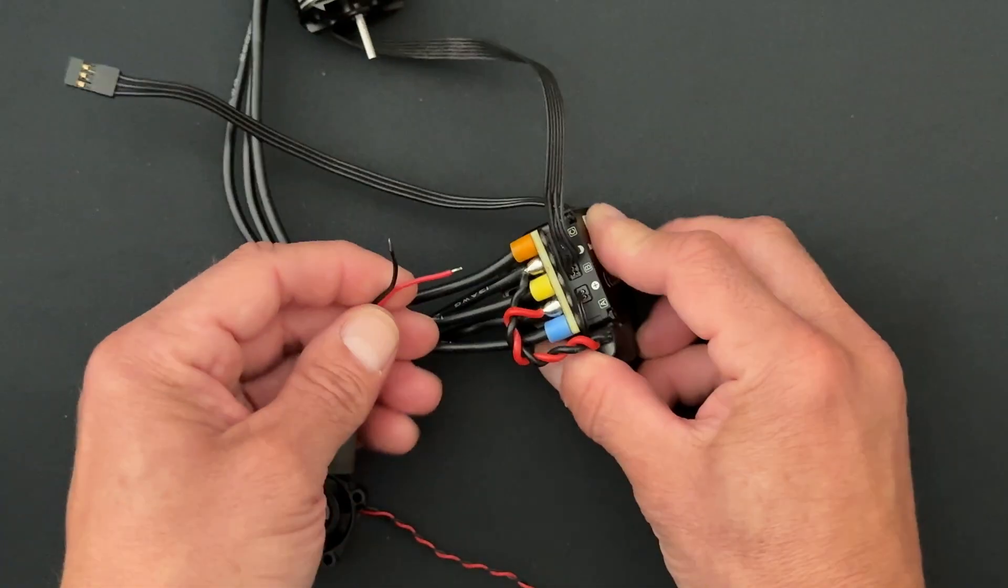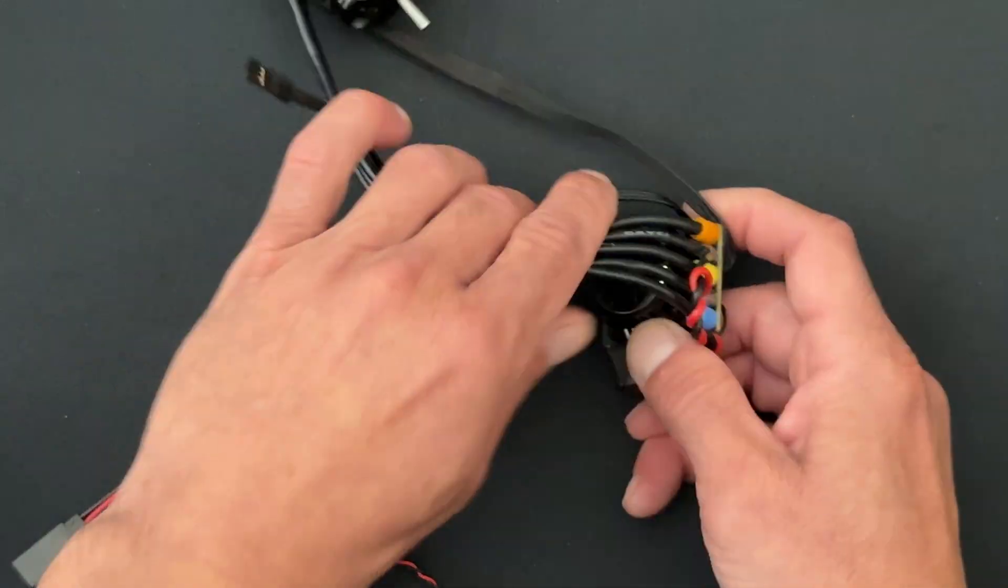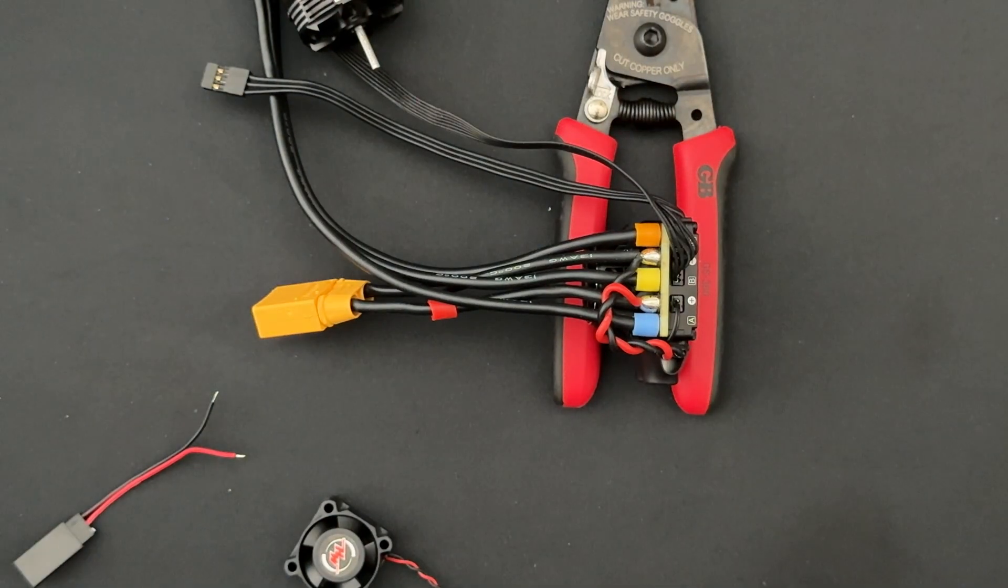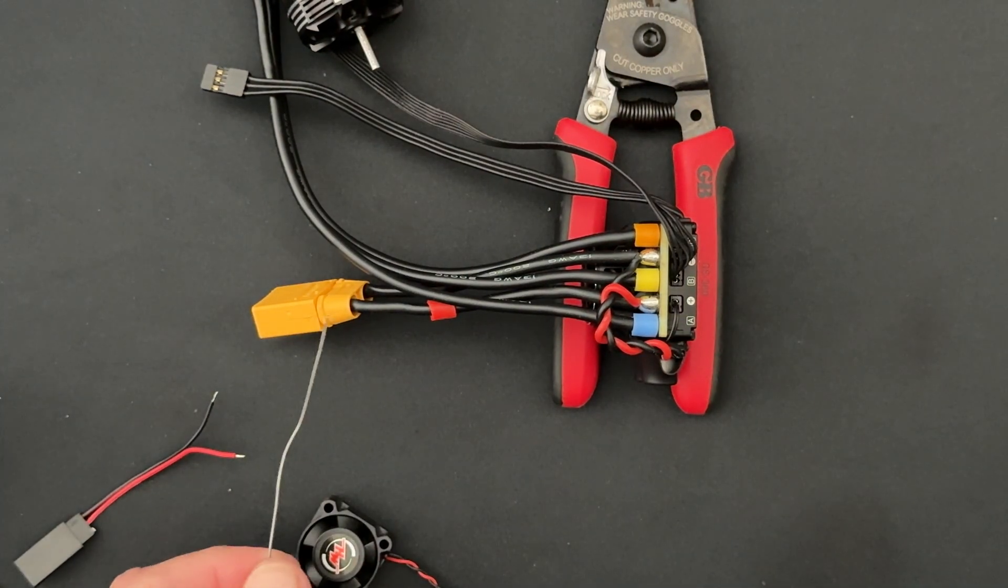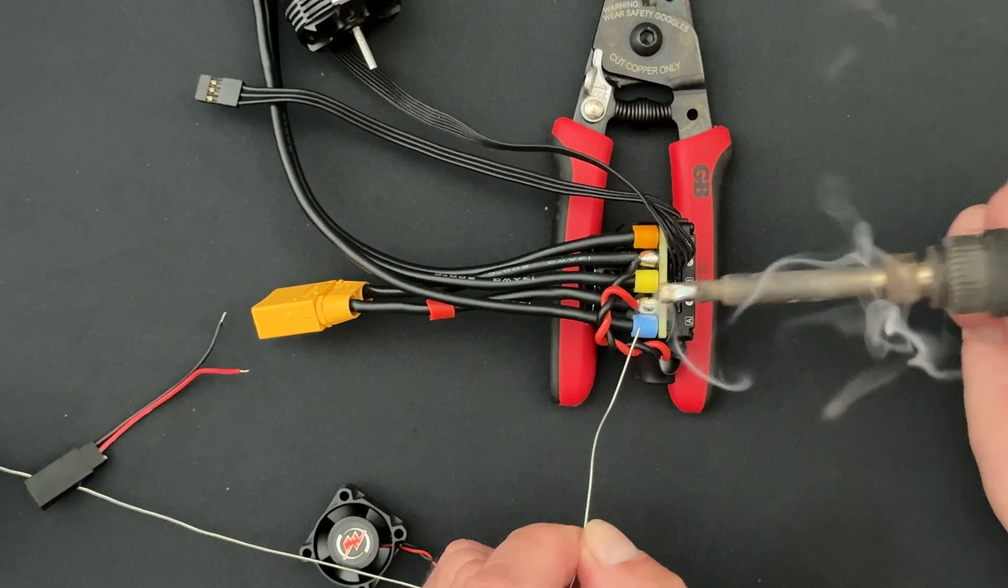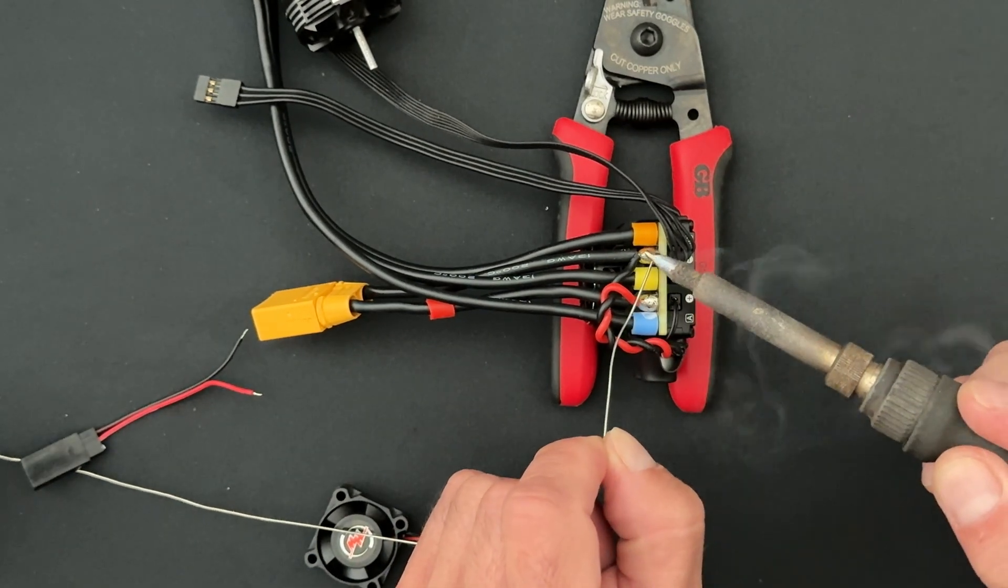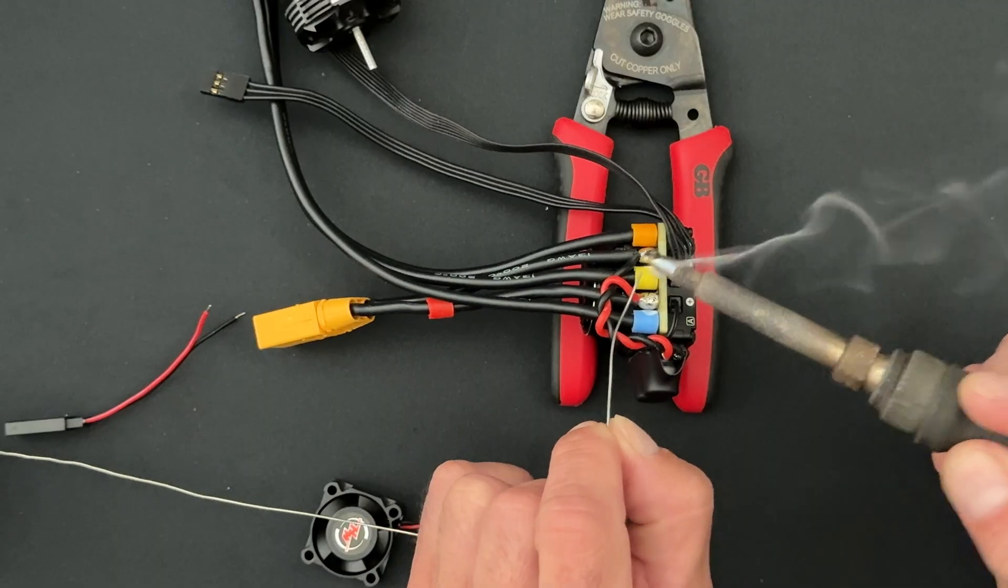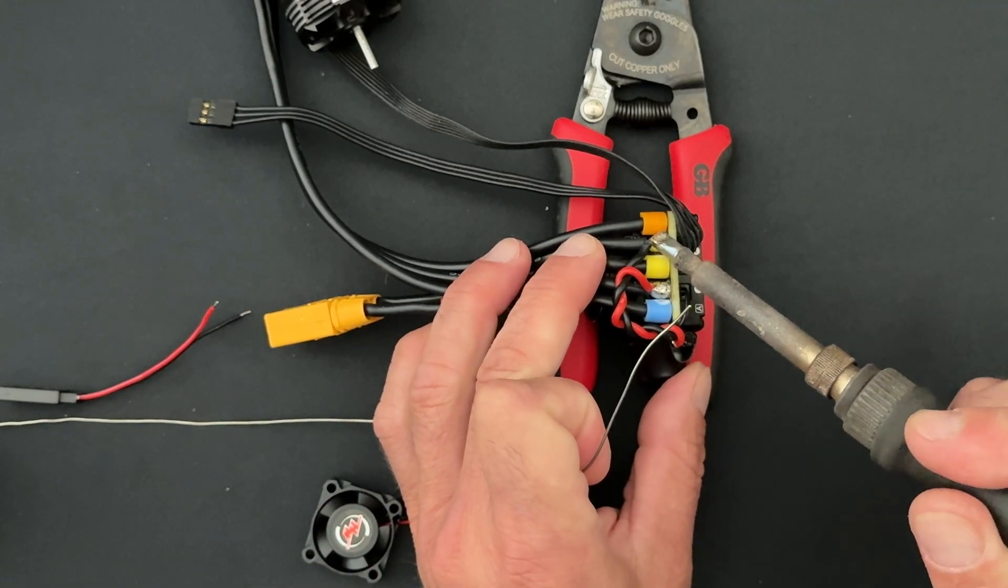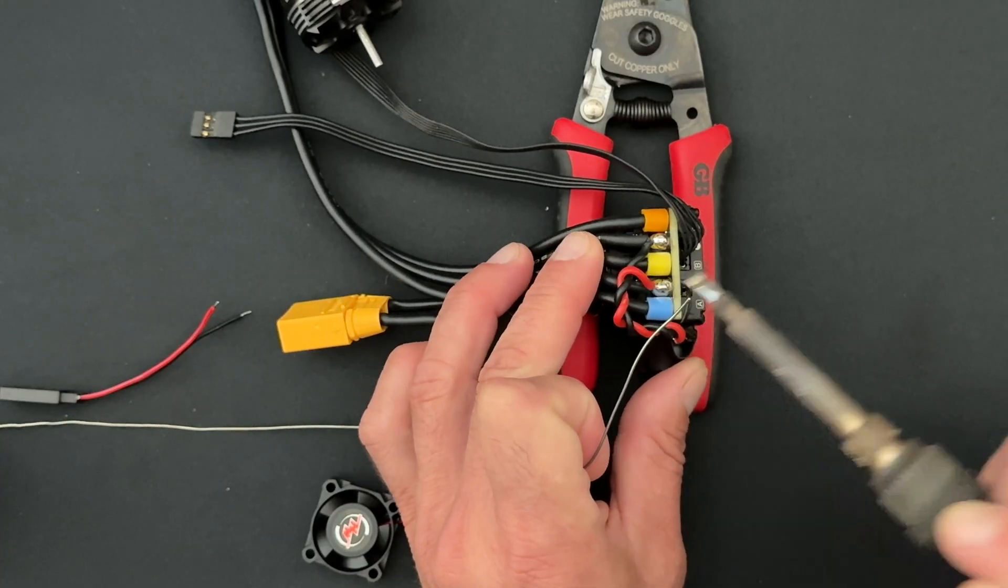And then all I do is I take this and tack it there and tack it there. But before I do that, I like to give the speed control just a little bit of fresh solder right there, or solder if you're not an American like us, because it is spelled solder. I will give you that. So a little bit of extra tin that's not working right on the edge there just makes it a little easier to tack these wires on top.